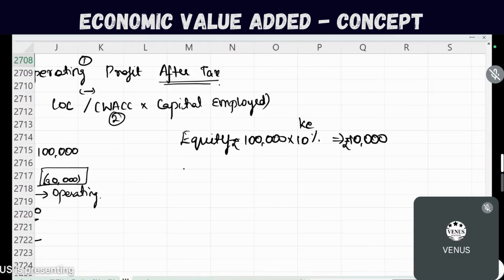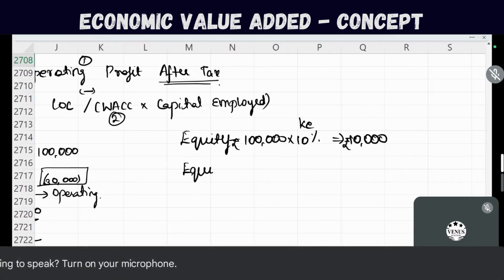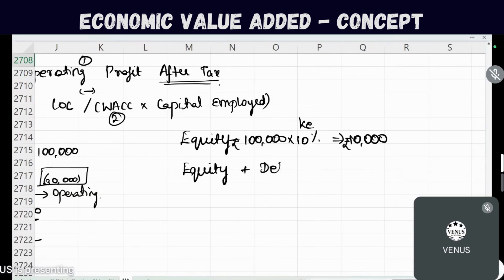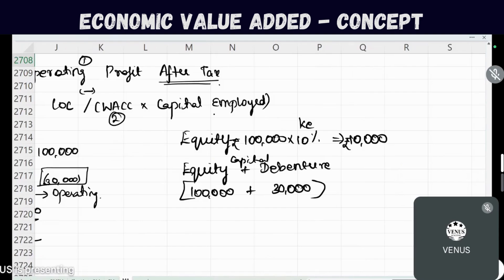A company's capital structure incorporates equity plus debt. The equity portion may be 1 lakh rupees and the debt portion, for example, 30,000 rupees. Together, this is the capital employed. We then charge the cost of capital, which consists of two components: cost of debt and cost of equity.